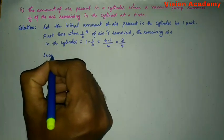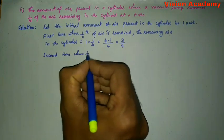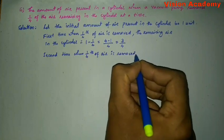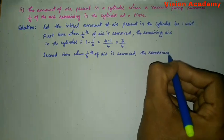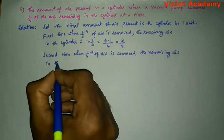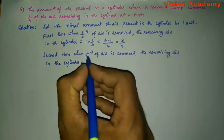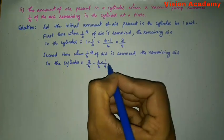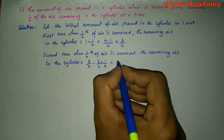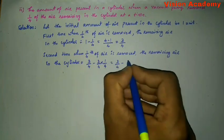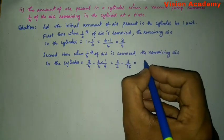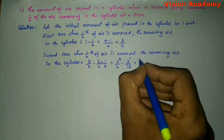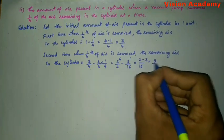Second time, the remaining air is equal to 3/4 minus 1/4 of 3/4. Taking LCM as 16: 12 minus 3 over 16, which equals 9/16.